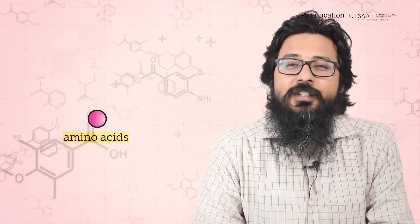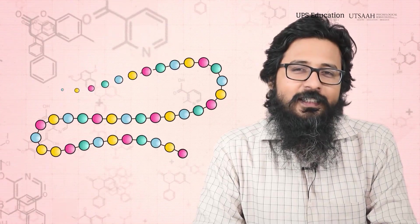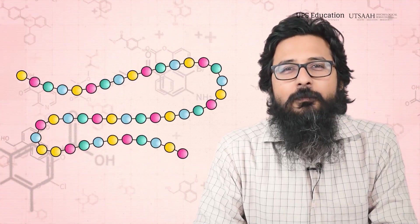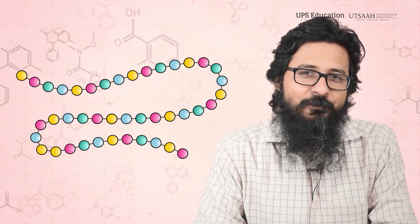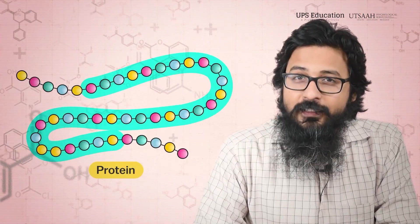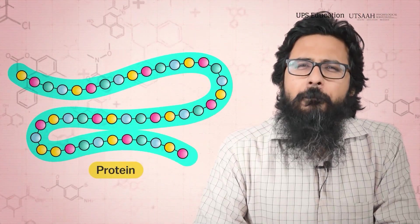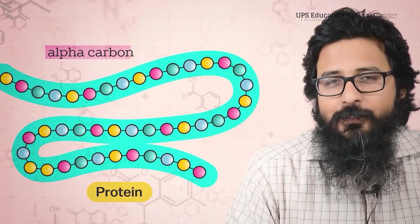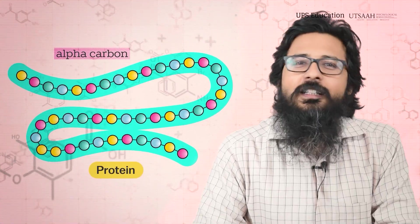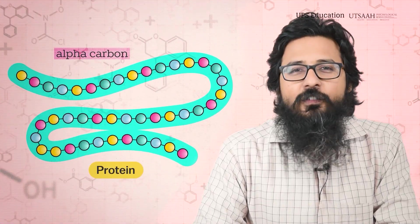Amino acids are organic compounds that serve as the building blocks of proteins. They are crucial for various biological processes in living organisms. Amino acids have a main part called the alpha carbon — imagine it like the center of a wheel.